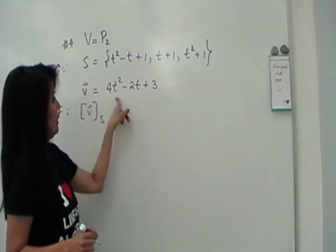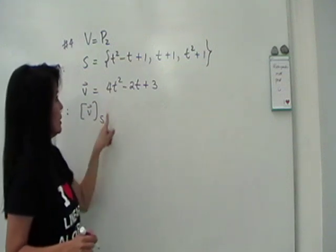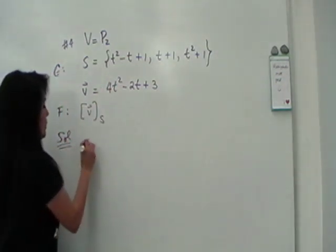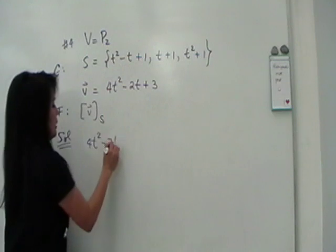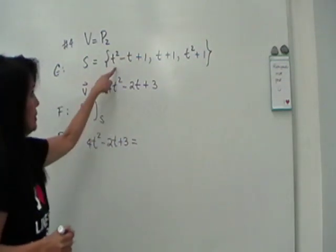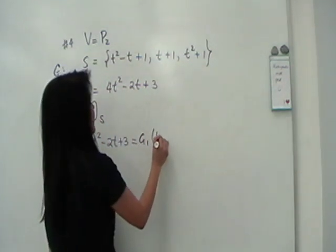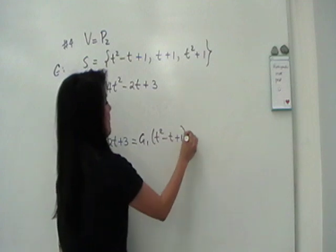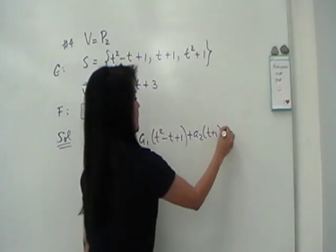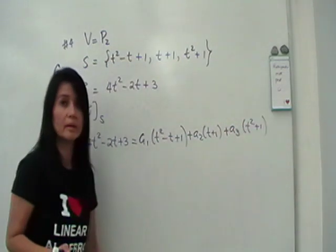So this is what we're given for us to find the coordinate vector of V with respect to S. And now we don't have a natural basis, so it's harder to see. So, really, all we want to do is what? If we want to find the coordinate vector of this with respect to S, the solution really is simply to express 4T squared minus 2T plus 3 as a linear combination of these three.